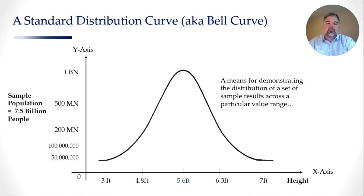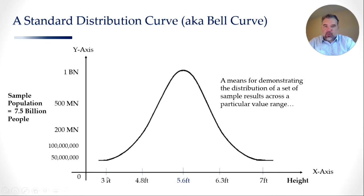For example, if we were to measure the height of all the individuals on this planet, on our x-axis we could have our height range going from roughly 3 feet to 7 feet. And on the y-axis, we would have our sample population of 7.5 billion people and the number of people that would correlate to each height range.